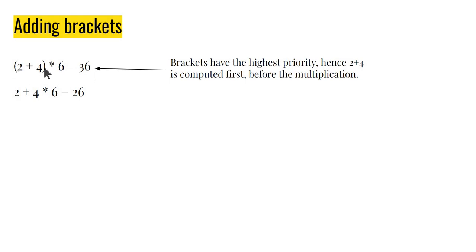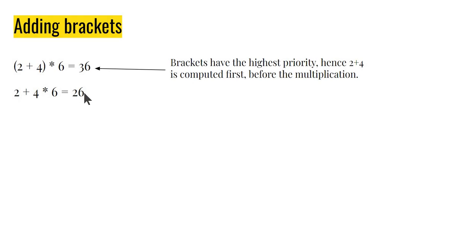For example, 2 plus 4 inside brackets times 6 is 36, because 2 plus 4 gets done before anything else. On the other hand, 2 plus 4 times 6 — in this case, multiplication is higher priority — so 24 plus 2, 26 is what you get. So brackets, or parentheses, change the game in quite a significant manner.